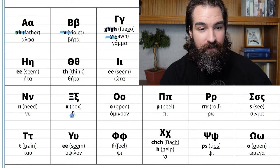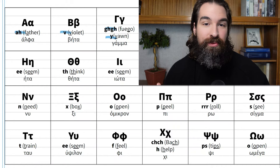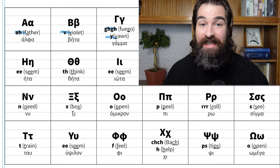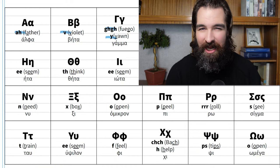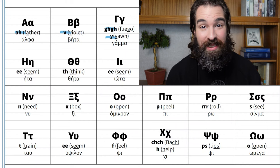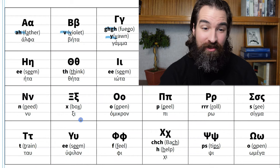Then we have xi, which makes an X sound. What's unique about Greek is that they will start words with an X sound. For example, the way you say 'xylophone' in Greek is 'xylophono.' In English we spell it with an X but pronounce it like a Z. Xi looks squiggly, sounds like an X, and you will find it at the beginning of words.